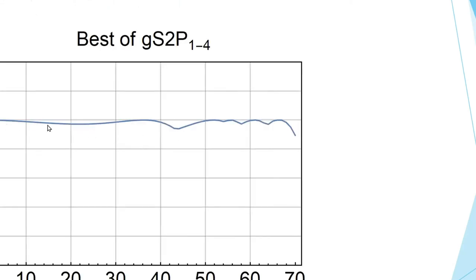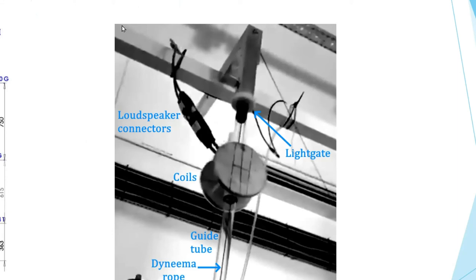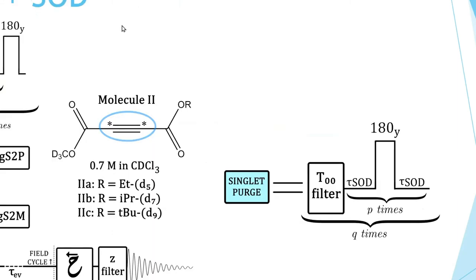This GS2P sequence is very optimal for singlet-to-precursor-order conversion. The experimental scheme is: start by making singlet order, subject it to a T00 filter to remove impure components, convert to long-lived eigenorder, and then you have the choice to either observe the long-lived eigenorder at high field or cycle it to low field where it gets transformed into singlet order. At the beginning of experiments, singlet purge cycles remove any residual long-lived order.